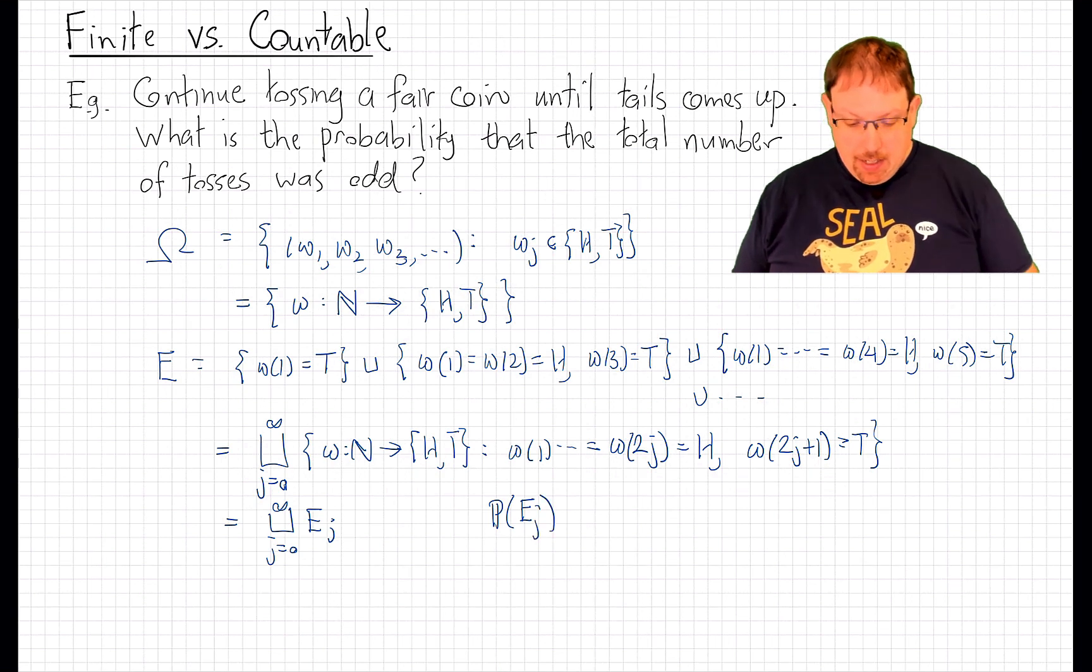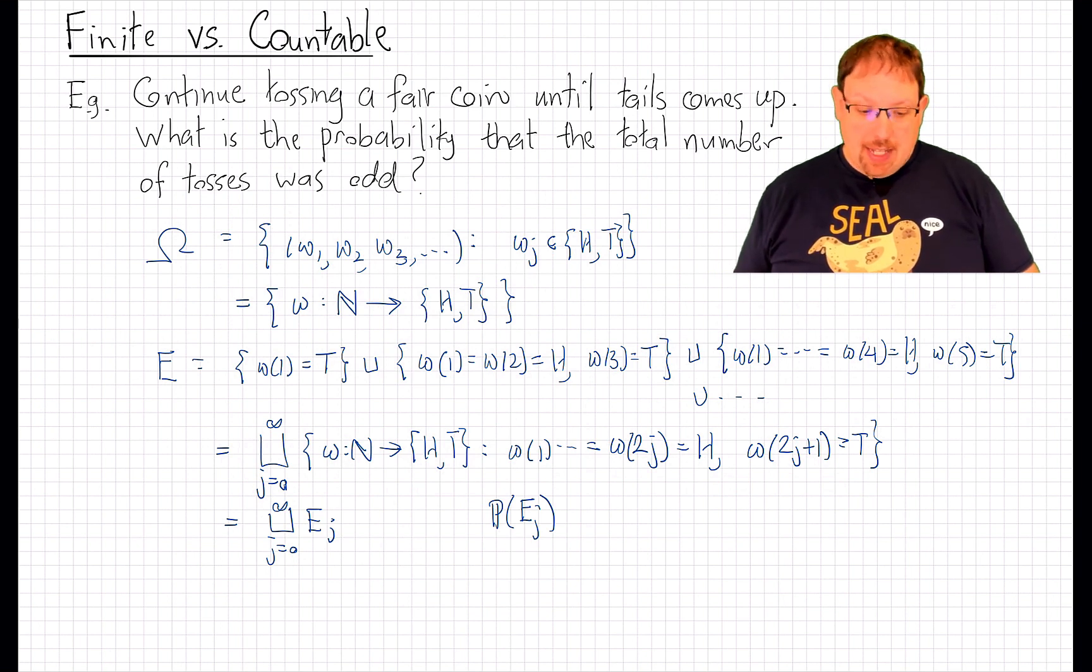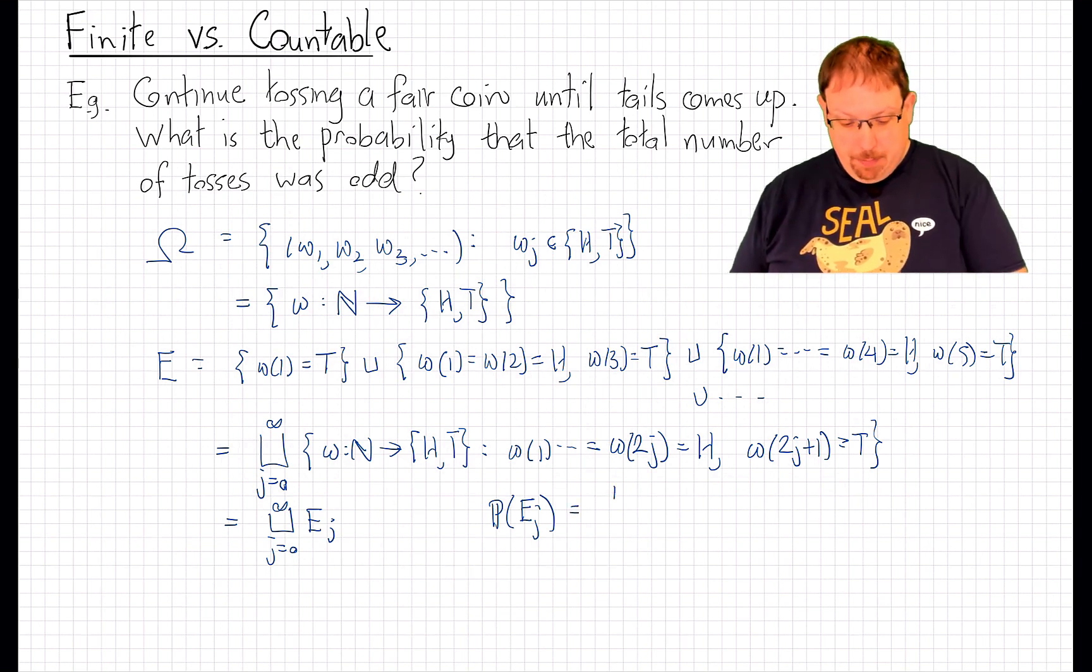the event E_j is the event that there are 2j heads followed by a tails. That specifies 2j+1 individual tosses. Each has probability 1/2, and so the probability of each one of those is 2^(2j+1) inverse.